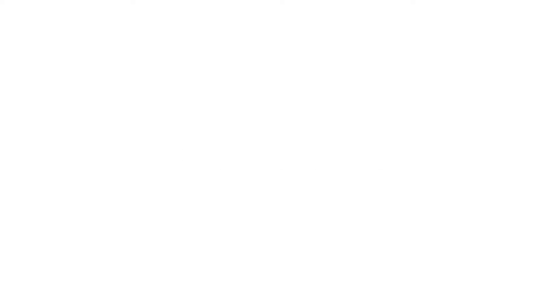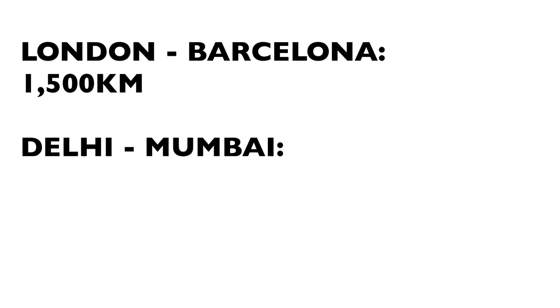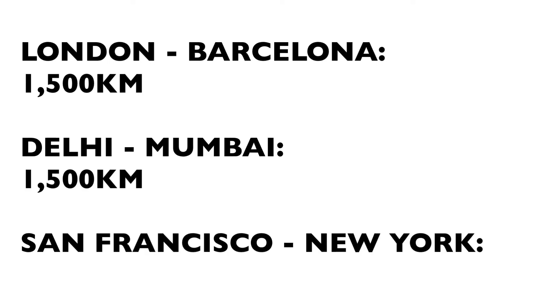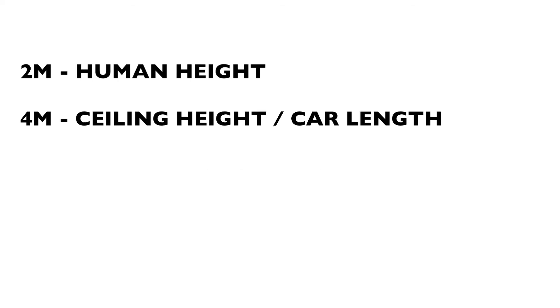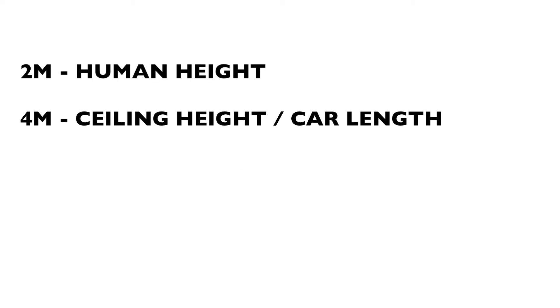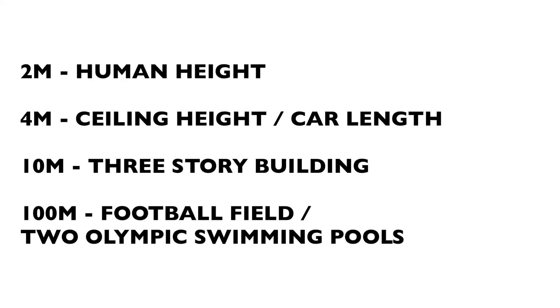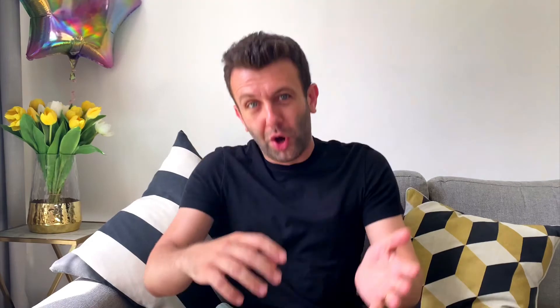Distances: the drive from London to Barcelona is 1,500 kilometers, the drive from Delhi to Mumbai is also 1,500 kilometers, and San Francisco to New York is about 4,500 kilometers. Some basic knowledge of international distances helps you work out things like flight times or transportation times. Length: two meters is roughly the size of a human; four meters is a ceiling height or car length; ten meters is a three-story building; a hundred meters is a football field or two Olympic swimming pools — useful if you're ever asked to calculate how many blades of grass are on a football field.